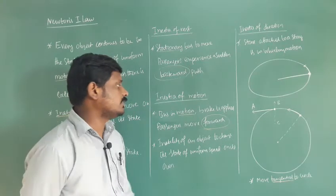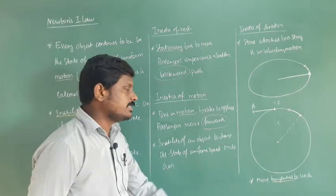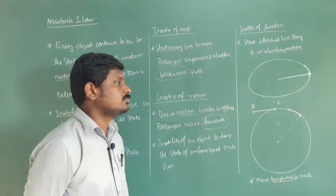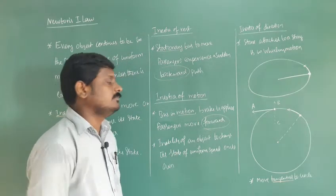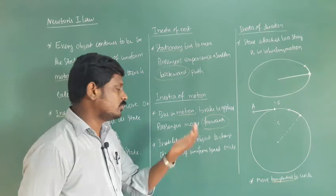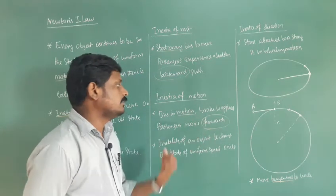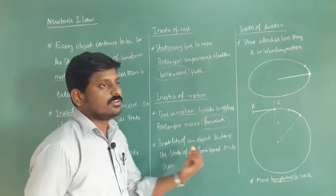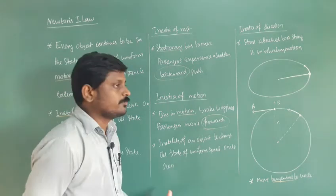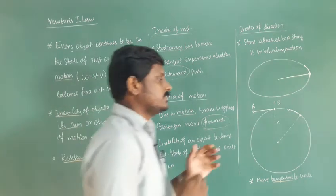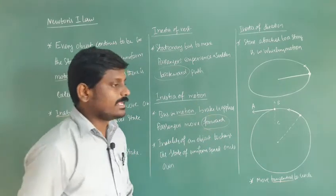For inertia of motion: the bus is moving and the brake is suddenly applied. The passengers move forward because they are moving with a certain velocity and are unable to stop on their own. That is inertia of motion — the inability of an object to change its state of uniform motion on its own. The passengers try to continue moving and end up hitting the front seat.